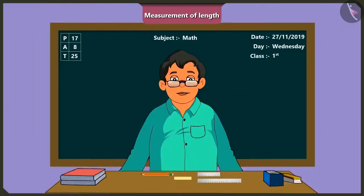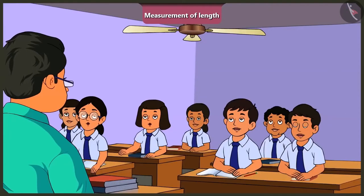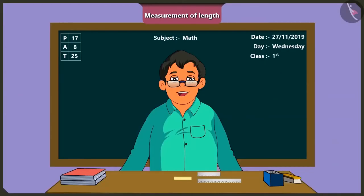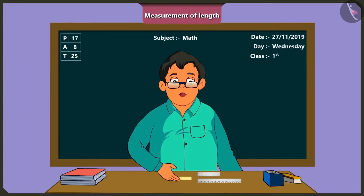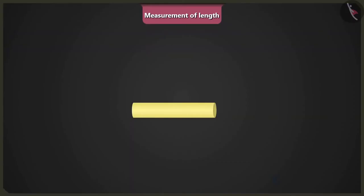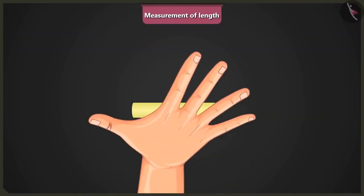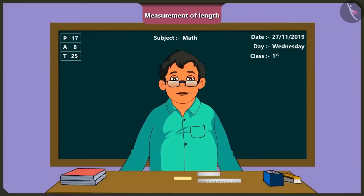Good morning children! Good morning sir! Today I will teach you to measure the length of things by using the length of fingers as a unit of measurement. So first of all, I will measure the length of this chalk. This chalk is shorter than one hand span, so here we will take a unit smaller than a hand span to measure the chalk.